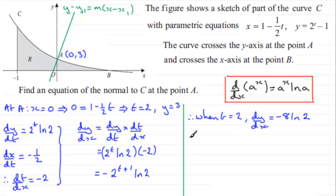That means that therefore the gradient of that normal, well it's going to be the negative reciprocal of this, so that's going to be equal to 1 over 8 multiplied by the natural log of 2. So therefore we've got everything we need now to get the equation of the normal.